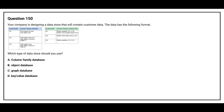Question number 150. Your company is designing a data store that will contain customer data. The data has a specific format. Which type of data store should you use? Option A: Column Family Database. Option B: Object Database. Option C: Graph Database. Option D: Key-Value Database. The correct answer is Option A: Column Family Database.